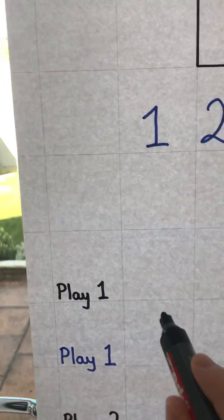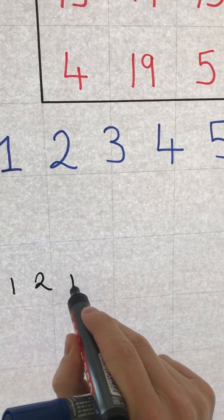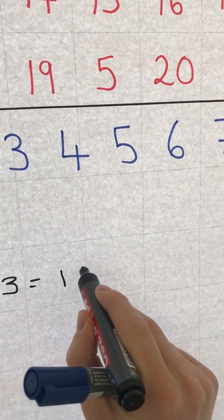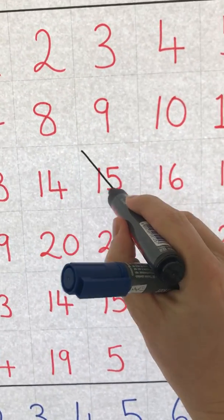Right, 12 and 3, so I'm going to put down here play one: 12 plus 3 gives me 15, and we're going to cross it off here. Done.